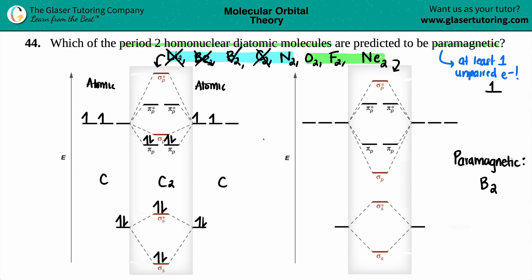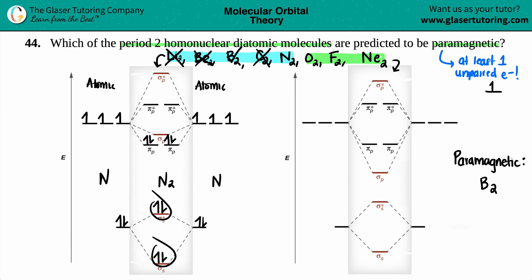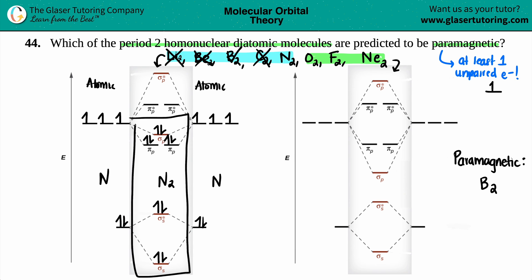N₂ has five valence electrons, so five plus five is a total of ten electrons. Filling from the bottom: two, four, six, eight, nine, ten. All orbitals are filled with paired electrons. There are no unpaired electrons, so N₂ is diamagnetic. That finishes the first diagram.